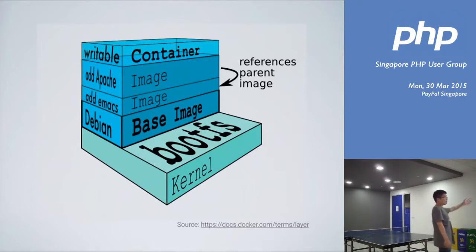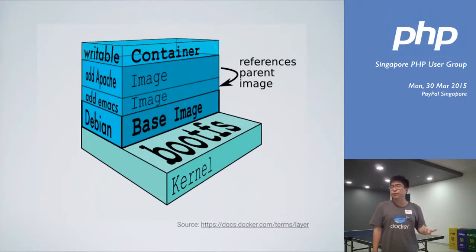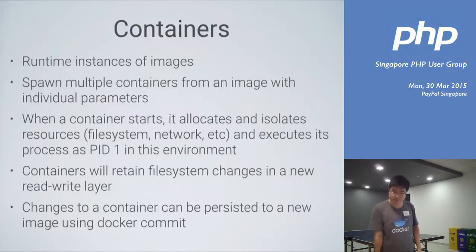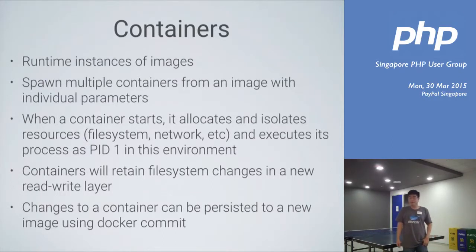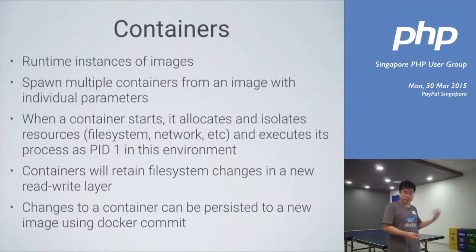You have the base, basically the root filesystem — which most Linux distributions include. Then you start adding layers on top. For example, you run a command, add a few files related to Emacs or Apache. This causes changes to the file system, which are saved as a layer. Containers are simply runtime instances of images. Based on an image, you spawn a container, which creates an additional read-write layer on top of that image. When it starts, it allocates and isolates resources using Linux tools — cgroups, namespaces and so on — isolates the file system and network, and executes the process as the first process ID.